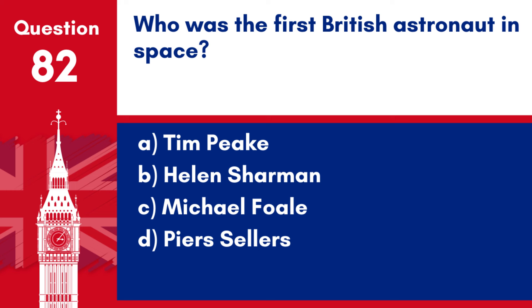Question 82. Who was the first British astronaut in space? a. Tim Peake. b. Helen Sharman. c. Michael Foale. d. Piers Sellers.